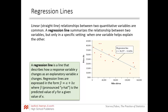The regression line describes how a response variable y changes as an explanatory variable x changes. Regression lines are expressed using the notation y-hat, which is the predicted value for y. Later we might have actual data and compare it to the predicted data.